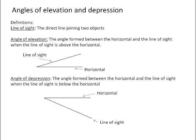The first definition that we need to be aware of is the idea of line of sight. The line of sight is the direct line that is joining two objects together. So if I am standing and looking directly at something, the line from my eyes to the object would be the line of sight.